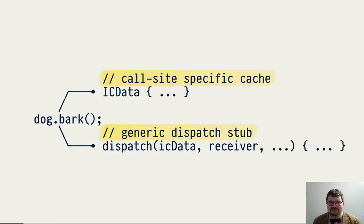For example, if this call site has seen an instance of class Dog, what does the method bark resolve to on that class? The second piece of information is a handwritten piece of machine code which performs the dispatch. It starts by consulting the cache; if there's already a cached entry it will be used, otherwise the runtime system performs the resolution and populates the cache, then jumps to the result of the method resolution.